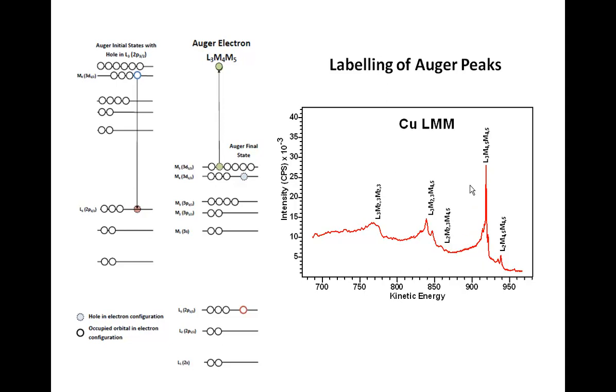If we want to highlight other peaks with more precision, we can say this is an L3 M4 M5. The reason it's M4 M5 is because we know that the M4 M5 states are involved, but we don't have the precision within our energy resolution to actually differentiate between all the different possible states that occur.